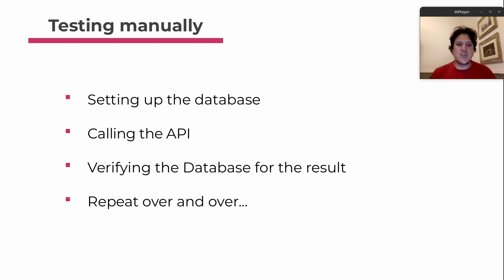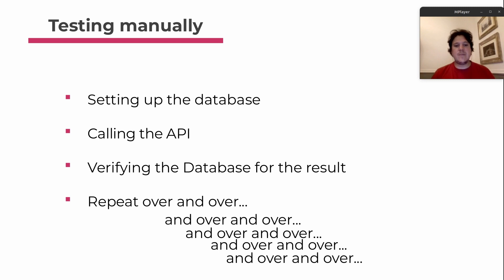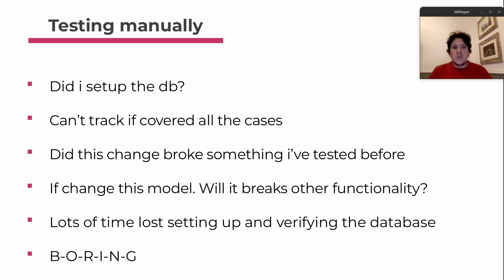So you set the database, call the API, verify the database for the result. If I have five items in stock and purchase two, I'll have three items left. If the test goes wrong, the database is already bad for testing, so we need to set up the database again, call the API, verify the results — and if the results aren't what we want, we need to reset the database again. We're constantly changing and checking the database over and over.